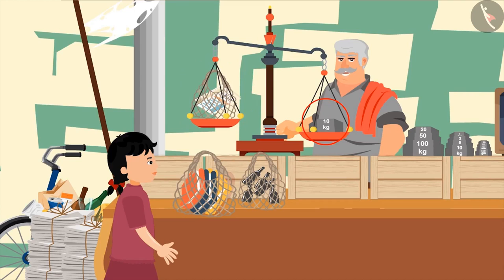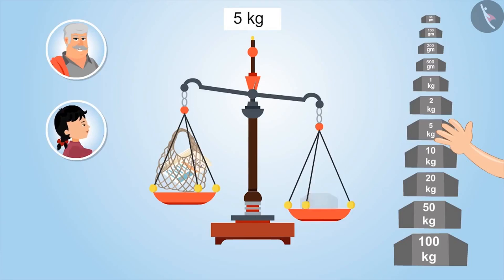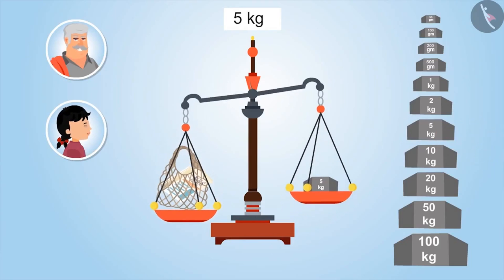Look, the side carrying 10 kg weighing stone moved downwards, while the side carrying the newspapers moved upwards. This means the weight of the newspaper is less than 10 kgs. Hmm, Uncle, what should we do now? We will put stone which weighs less than 10 kgs. So, can you tell me which weighing stone is smaller than 10 kgs? 5 kgs. Let's place this. Uncle, now the side carrying the newspaper has moved downwards. Which means? This means that the weight of the newspaper is more than 5 kgs. Yes.